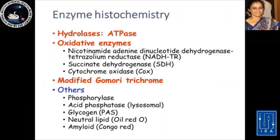This slide lists the various enzyme stains we do. This includes the ATPase stain, which helps differentiate type 1 and type 2 myofibers, and the oxidative enzymes which include NADH, SDH, and cytochrome oxidase (COX). Then comes the all-time favorite, the modified Gomory trichrome. Several other tests are performed only when indicated — for example, if glycogen storage is suspected we do a PAS (periodic acid-Schiff) stain, or if lipid storage is suspected, we do an oil red stain.